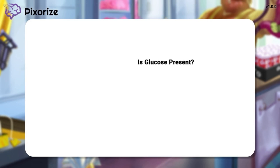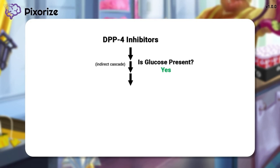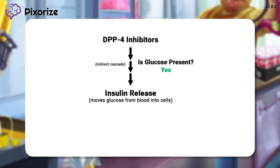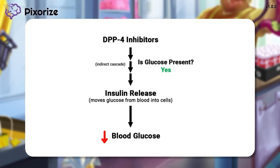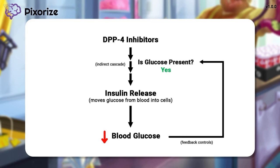When glucose is present, DPP-4 inhibitors stimulate an indirect cascade involving several other hormones that ultimately cause insulin release from the pancreas, and this released insulin then works to decrease blood glucose levels. The specifics of exactly how DPP-4 inhibitors cause insulin release are not important. Instead, you just need to know that this indirect cascade maintains your body's natural feedback controls that prevent insulin release from spiraling out of control.